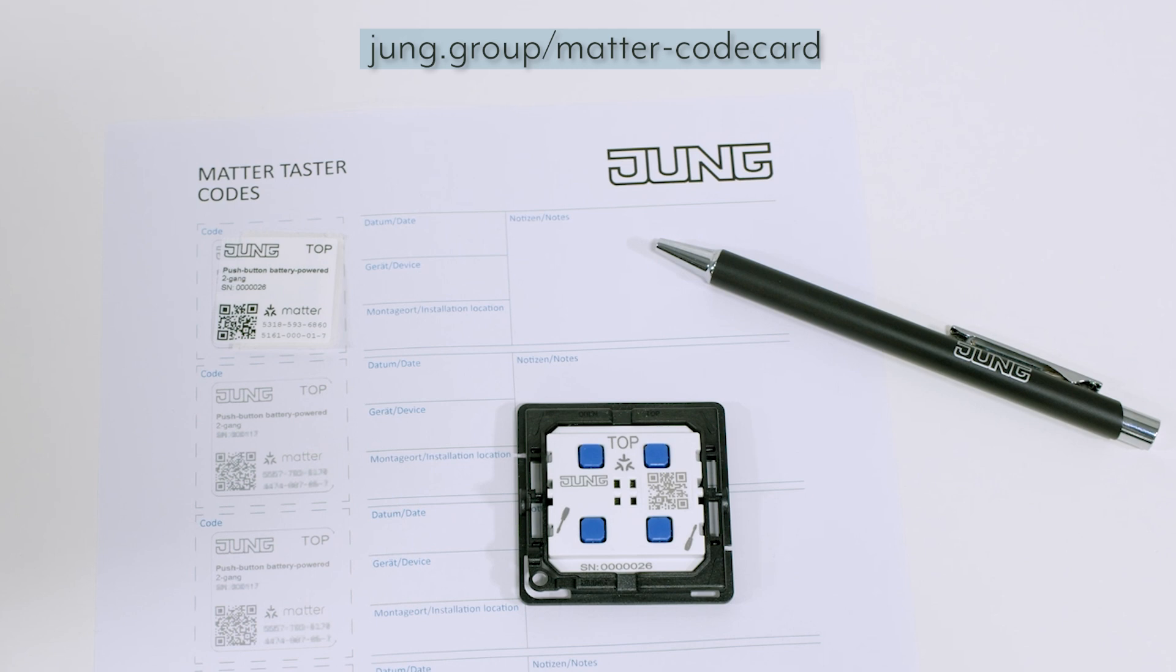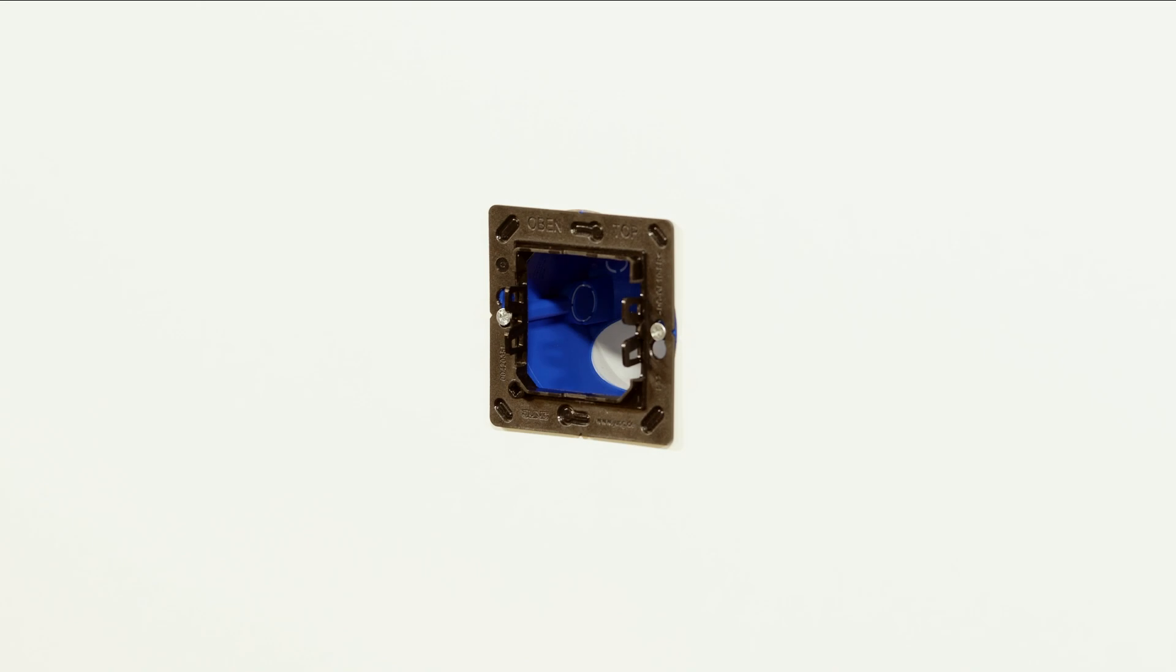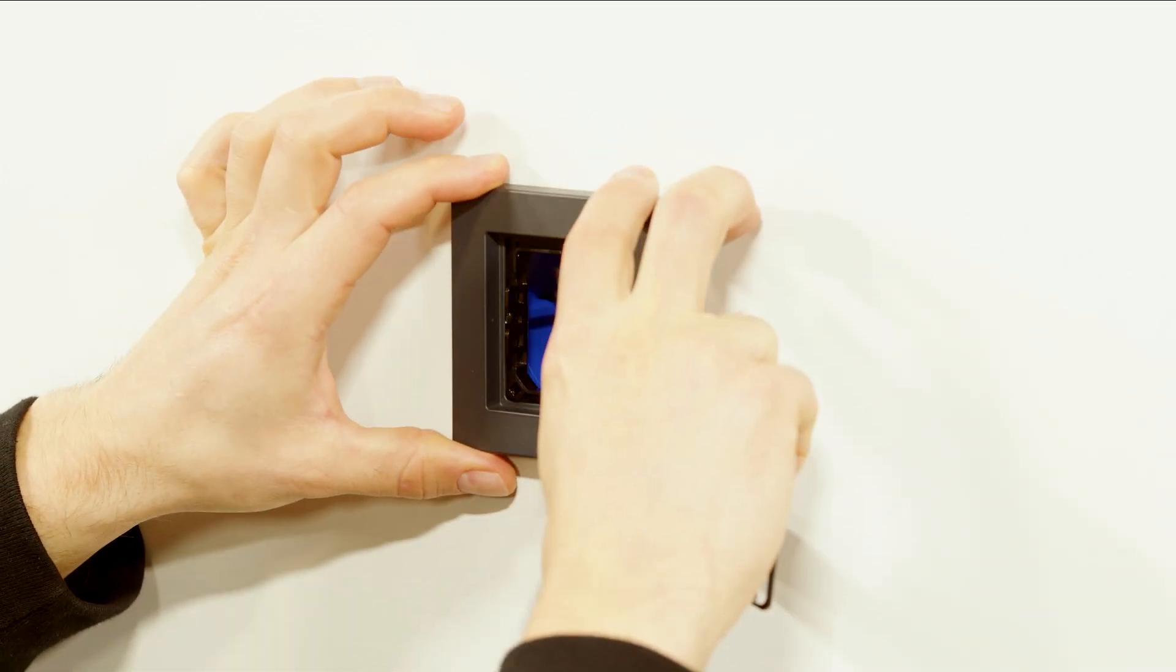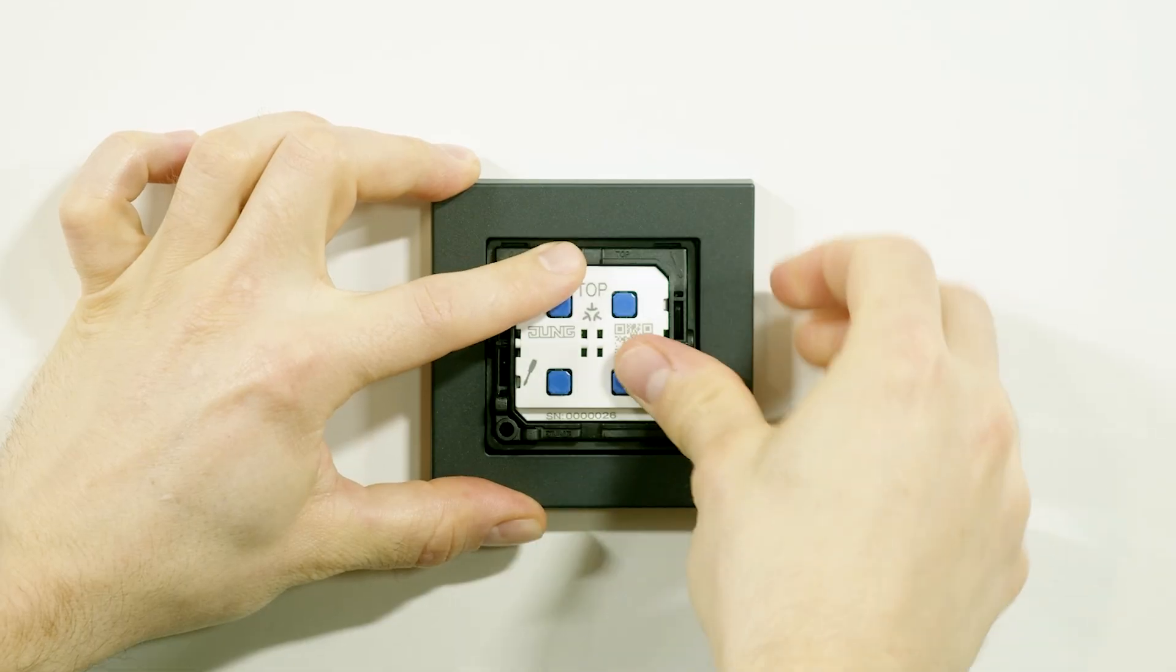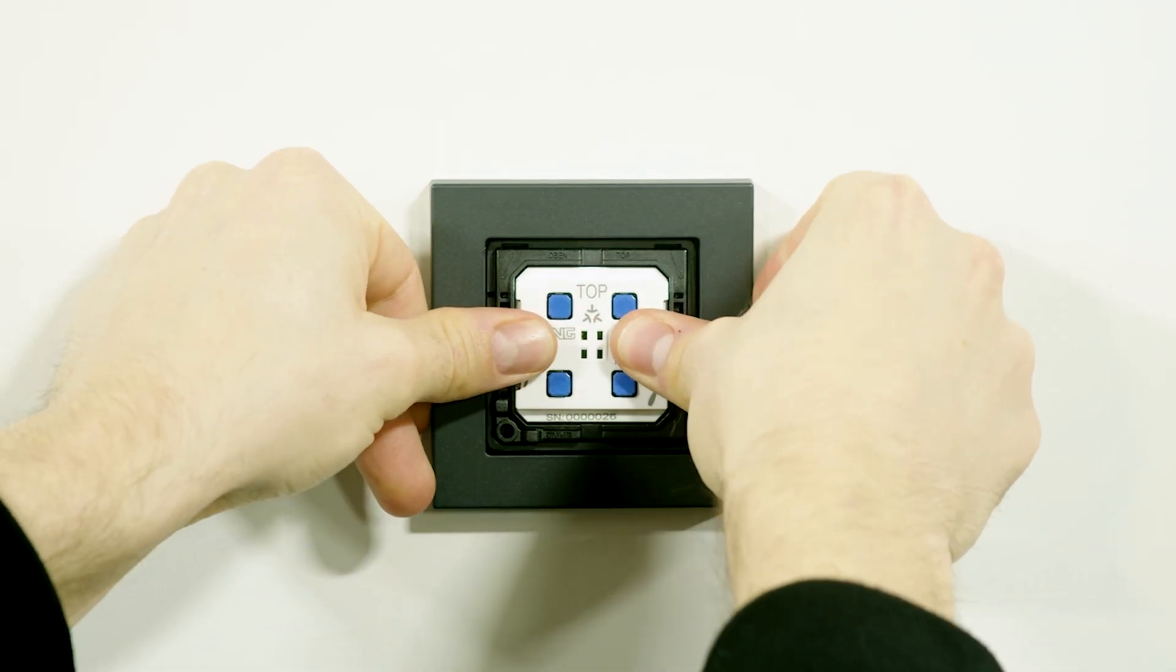The primary code card is a copy of the lasered QR code on the radio module. It serves as a fallback option if the QR code on the module itself cannot be read or for devices that are difficult to access, such as lights on the ceiling. Attach the radio module together with the design frame to the base plate. Make sure the top marking is facing upwards.